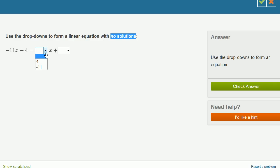So one, we can pick the coefficient on the x term, and then we can pick the constant. So if we made this negative 11x, so now we have a negative 11x on both sides. Here on the left-hand side, we have negative 11x plus 4.